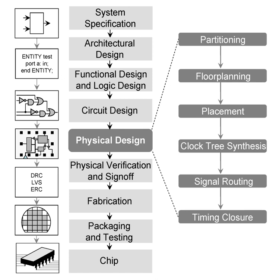Data paths are typically the areas of the design where multiple bits are processed in parallel, with each bit being modified the same way with maybe some influence from adjacent bits. Example structures that make up data paths are adders, subtractors, counters, registers, and muxes.